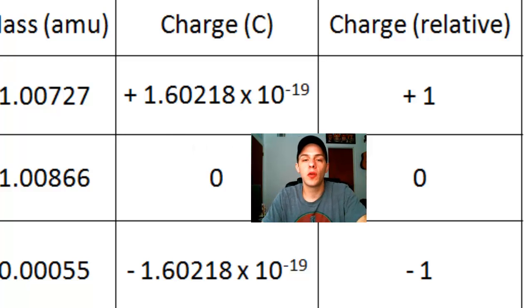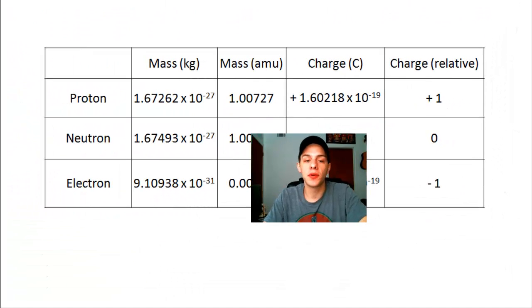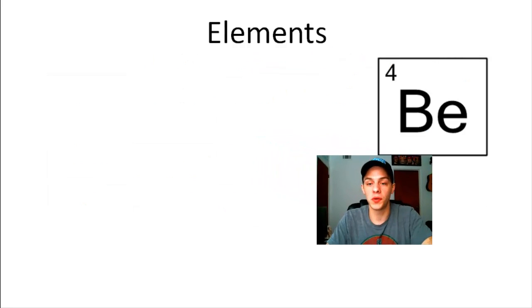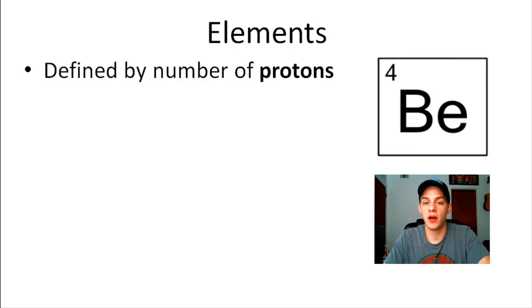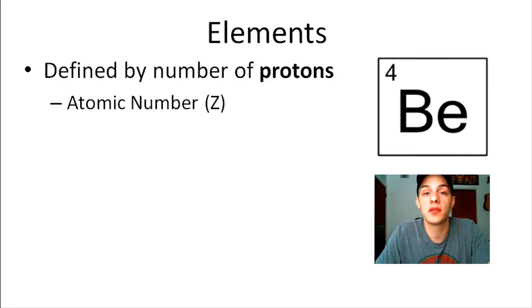So the question is, if all matter is composed of just these three subatomic particles, then what makes one element different from another element? And the answer is, it depends on the number of these subatomic particles. So when we talk about elements, we're talking about atoms that have a different number of protons. So the number of protons is what defines the element. And the number of protons is also called the atomic number, which is given the symbol Z.